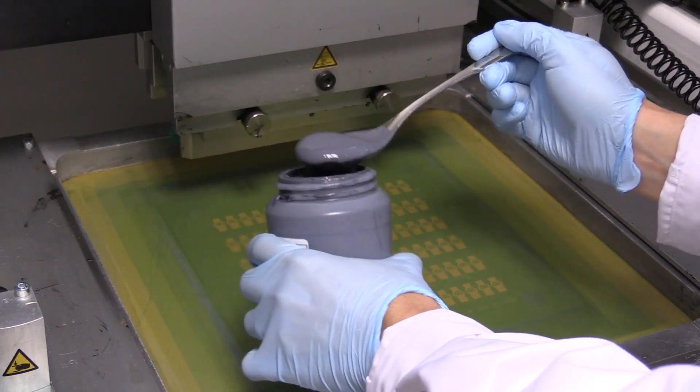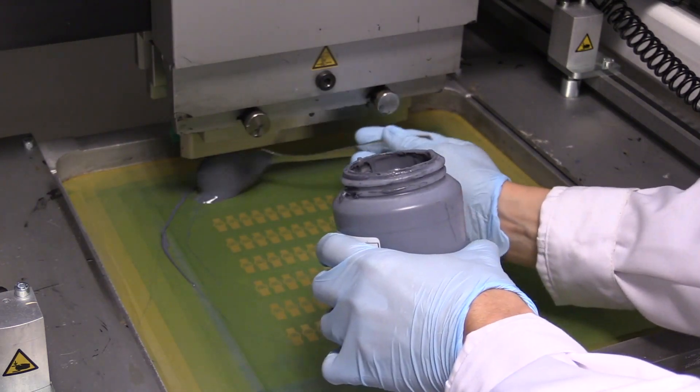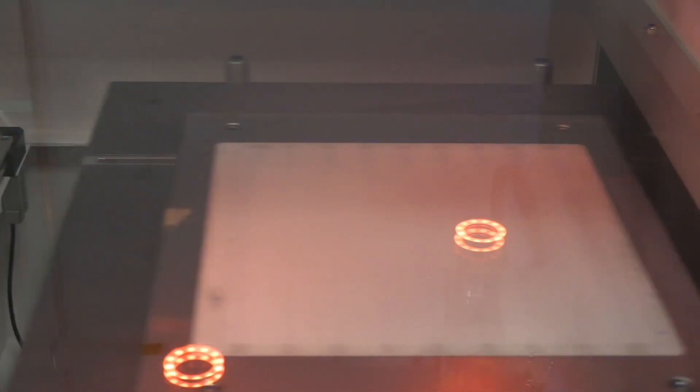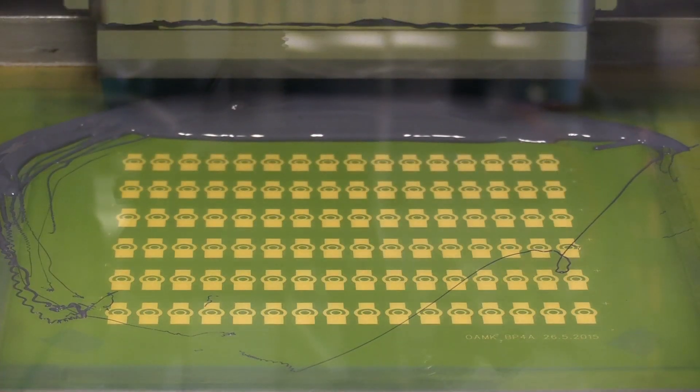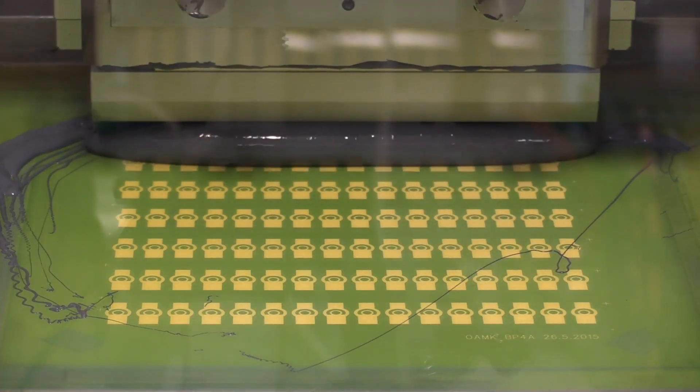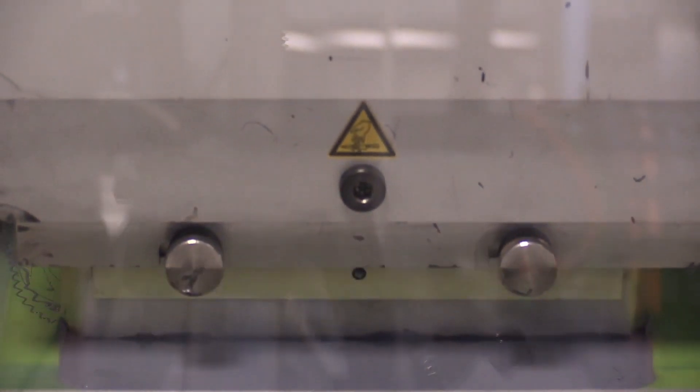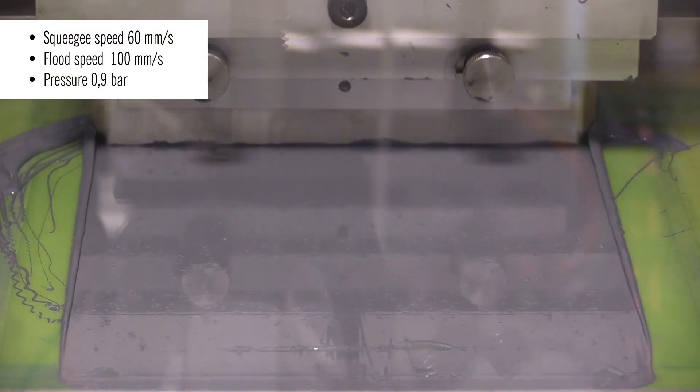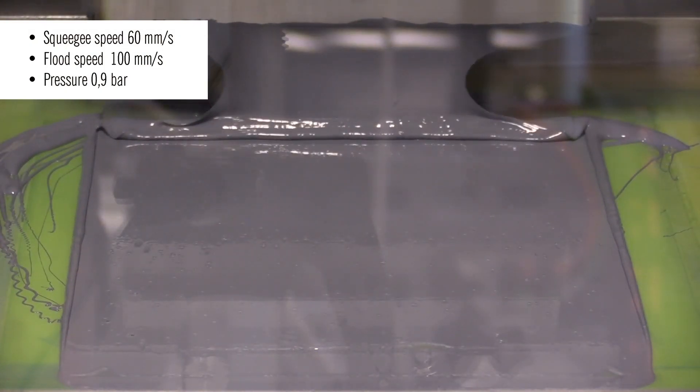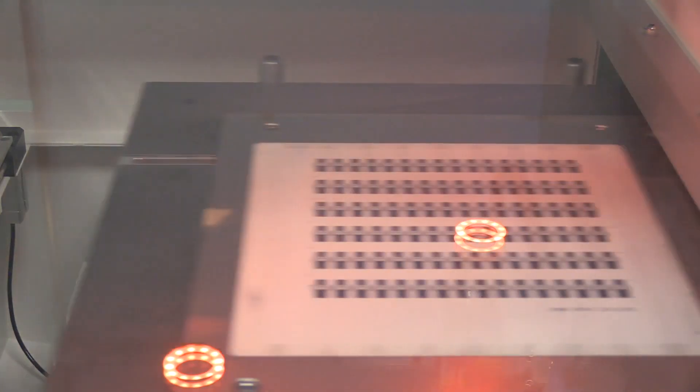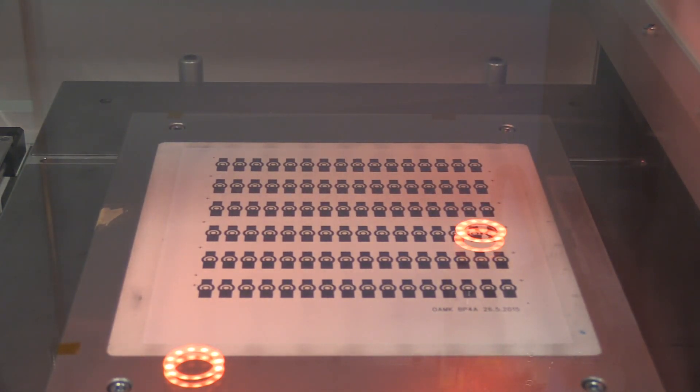Seuraavaksi annostellaan painomuste verkolle ja aloitetaan painaminen. Tarkastetaan painojälki ja säädetään parametreja tarvittaessa.